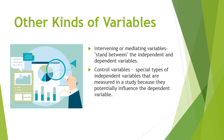The next one is control variables. Control variables are special types of independent variables that are measured in a study because they potentially influence the dependent variable. These kinds of variables are mostly needed during experimental research. For example, if you created a liquid formulation and want to test it on the plant growth of a certain crop — say, pechay — your IV is your developed liquid formulation and the DV is the plant growth. To determine the potential influence, we provide a control variable that must remain unchanged or constant, such as ordinary water, fertilizer, or pesticide usually used on the crop.